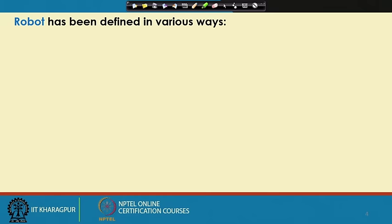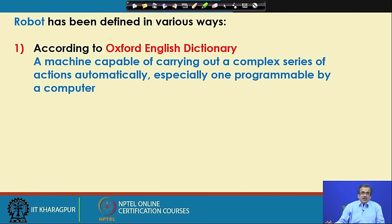If you see the literature, the term robot has been defined in a number of ways. For example, according to the Oxford English Dictionary, a robot is a machine capable of carrying out a complex series of actions automatically, especially one programmable by a computer. So this is nothing but an automatic machine.